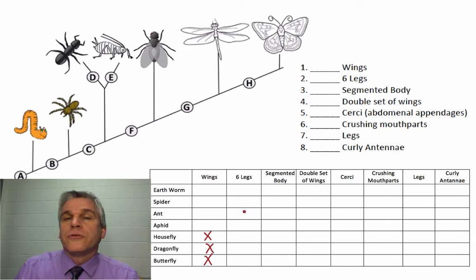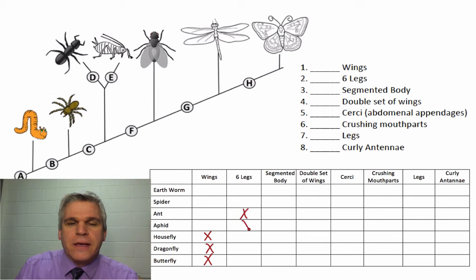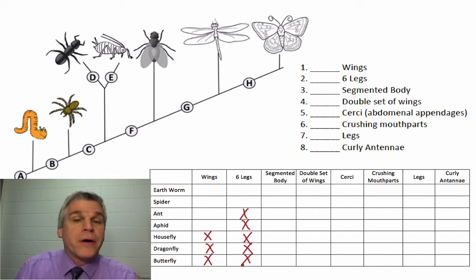Then we'll look at having six legs. Who has six legs? That would be the ant, the aphid, the housefly, the dragonfly, and the butterfly.